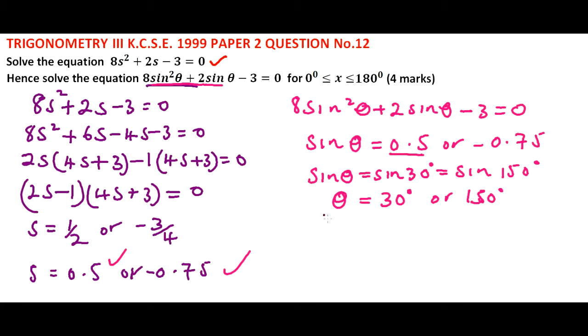When sinθ is -0.75, the angle is, we can say it is 180 + 48.6. So in this case, θ = 180 + 48.6°. This is because sine here is negative, so it is in the fourth quadrant and this will give us 228.6°.